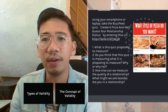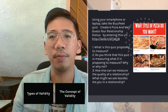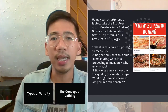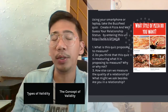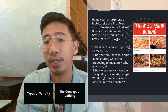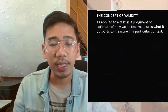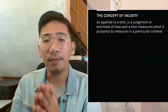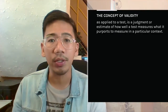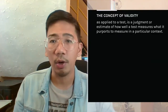When we say validity, it refers to how accurately a method measures what it is intended to measure. If a research has high validity, that means it produces a result that corresponds to real properties, characteristics, and variations in the physical or social world. In psychological assessment, when we say validity, it is a judgment or estimate of how well a test measures what it purports to measure in a particular context.